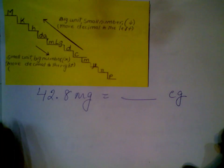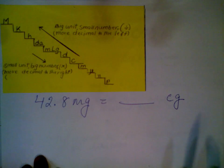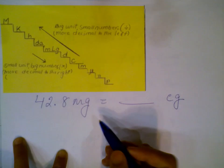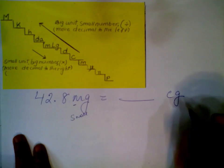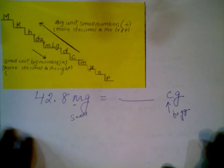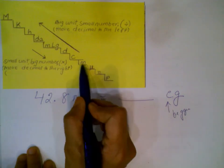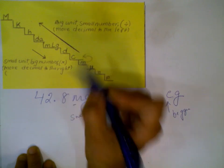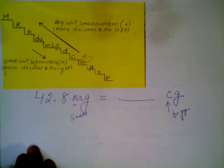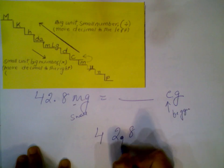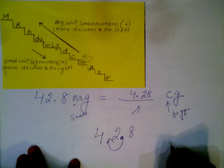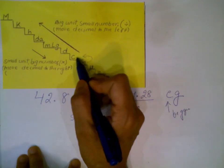Next problem: convert 42.8 milligrams to centigrams. This time our starting unit, milli, is smaller than our ending unit, centi. On the stair step, milli is here and centi is one step up to the left. You move one place to the left, so 42.8 becomes 4.28 centigrams. This is the same as dividing by 10.